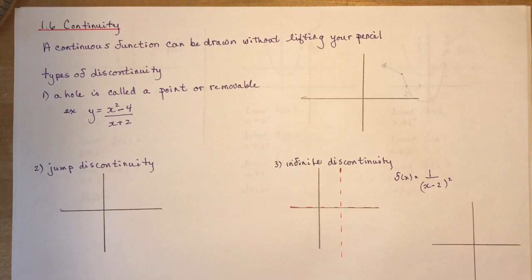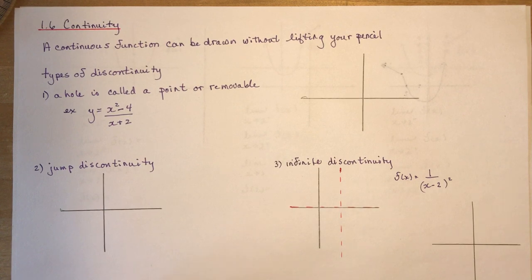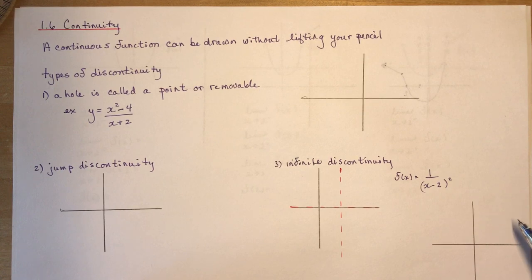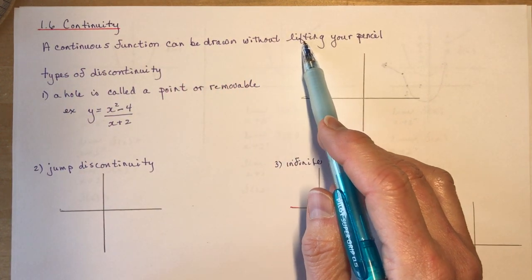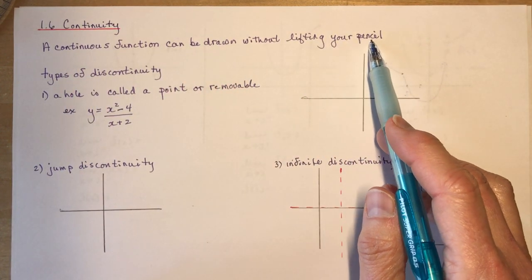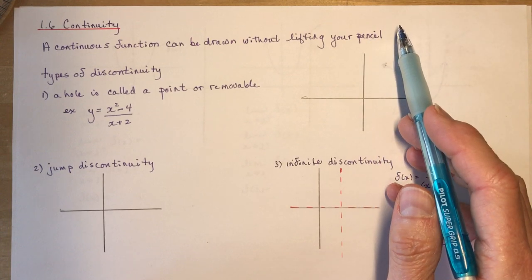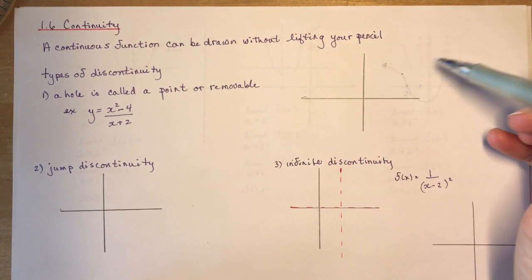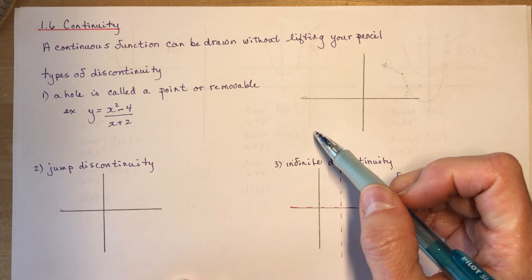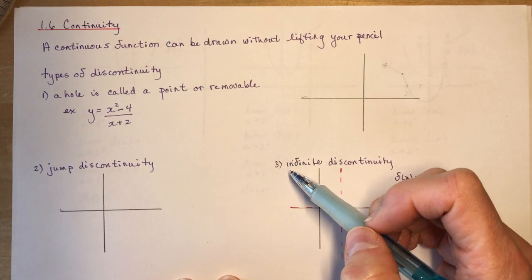Section 1.6 is continuity. What is a continuous function? We talked about this a little bit earlier but we'll go into it more now with some different kinds of examples. A continuous function can be drawn without lifting your pencil — that's pretty easy to figure out. If you have to lift your pencil or go around in circles, then it's not continuous.